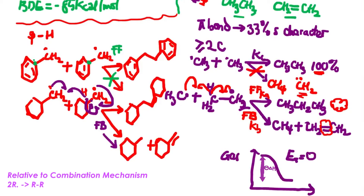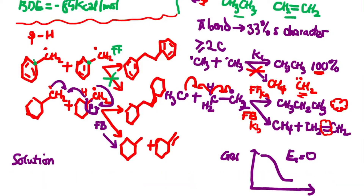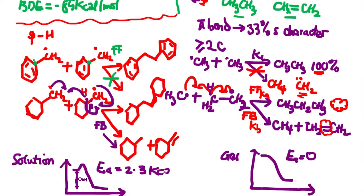However, when radicals are in solution, other solvent molecules inhibit the overlap of the two radicals and reduce their proximity. As a result, there is a small activation energy of approximately 2 to 3 kcal/mol. Performing radical-radical reactions in the gas phase is therefore more efficient than in solution.